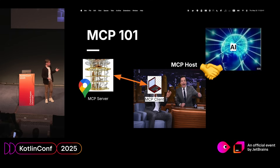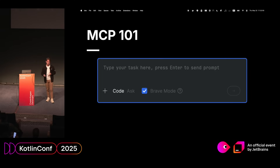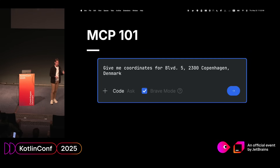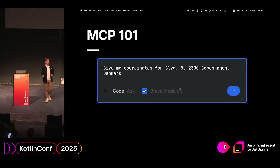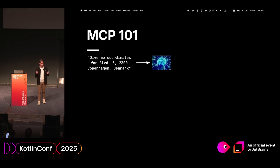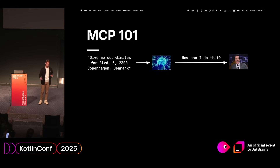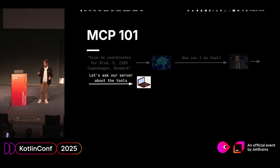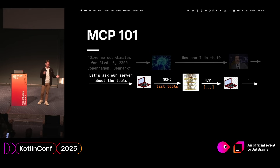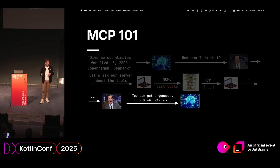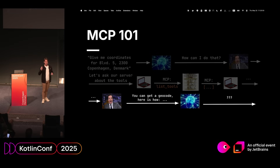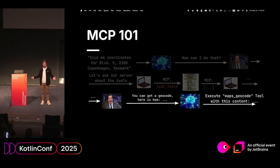Now our scheme is complete. Let's see how the flow of requests works. Take any chat — we assume it's MCP-capable. A simple request: 'give me coordinates for the address of our venue.' We send this to an LLM, and the LLM thinks: 'I don't have this information, but maybe I can get it somehow.' It goes to the host and asks how. The host looks at all available tools, sees a 'geocode' tool that returns coordinates from an address, and submits this information to the LLM.